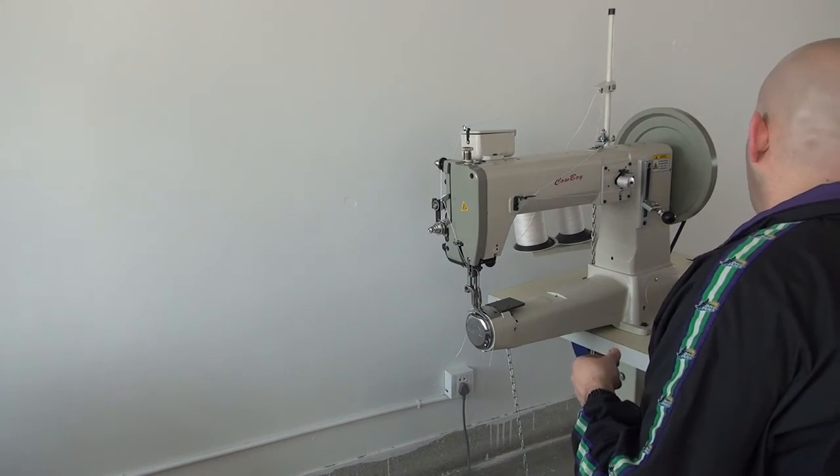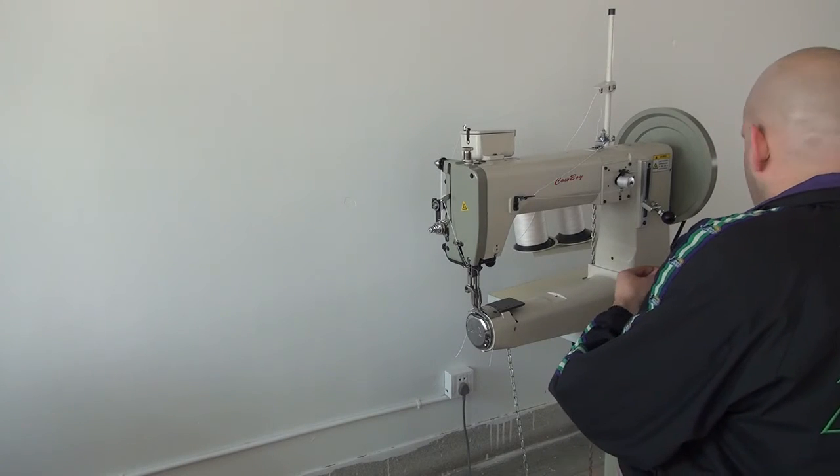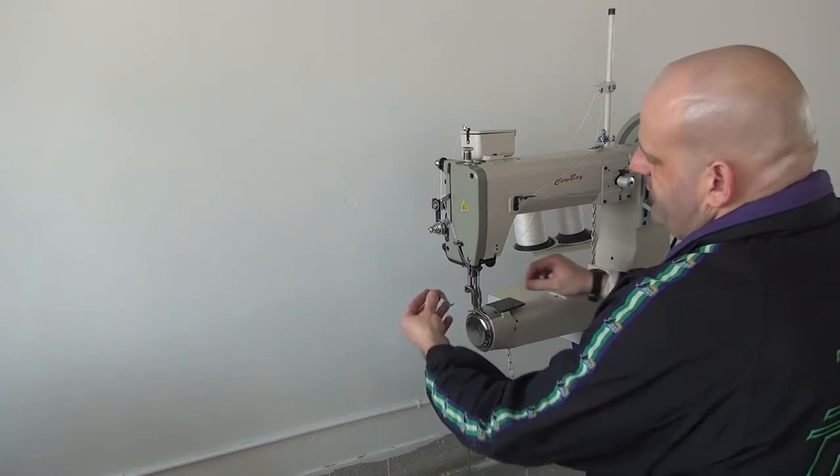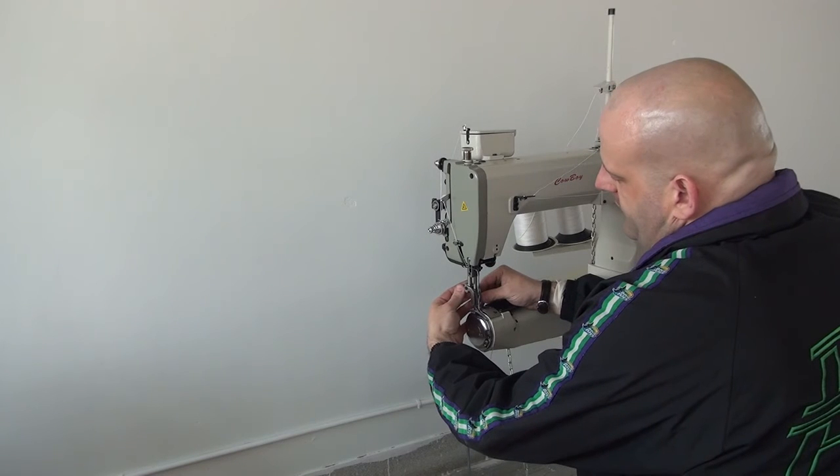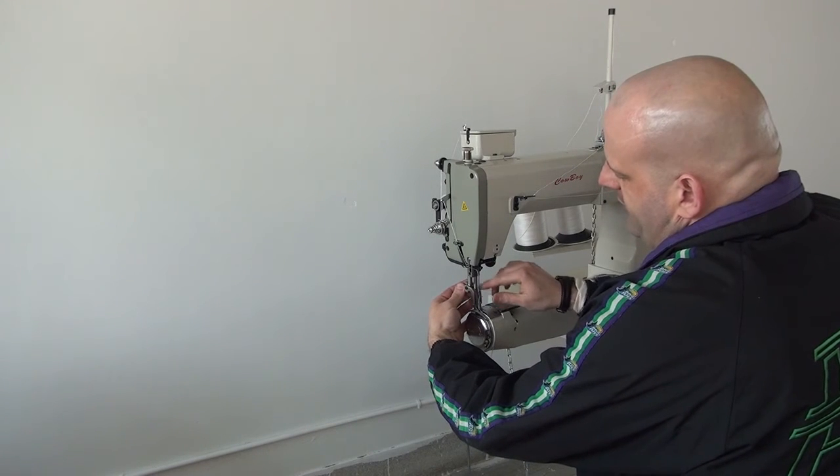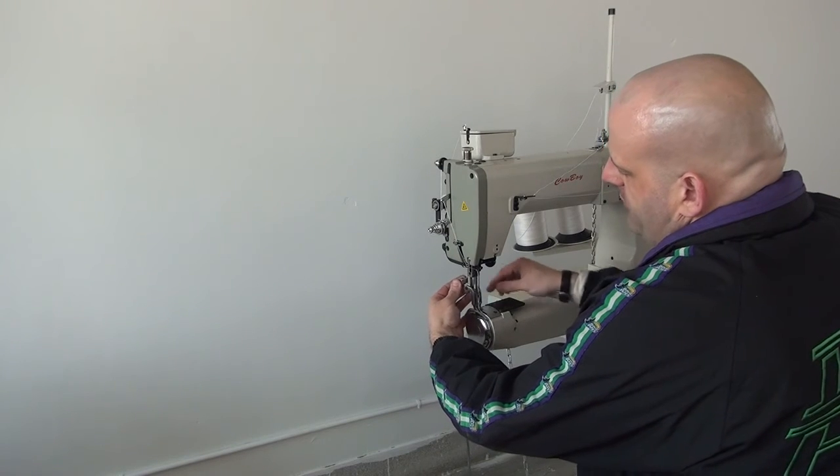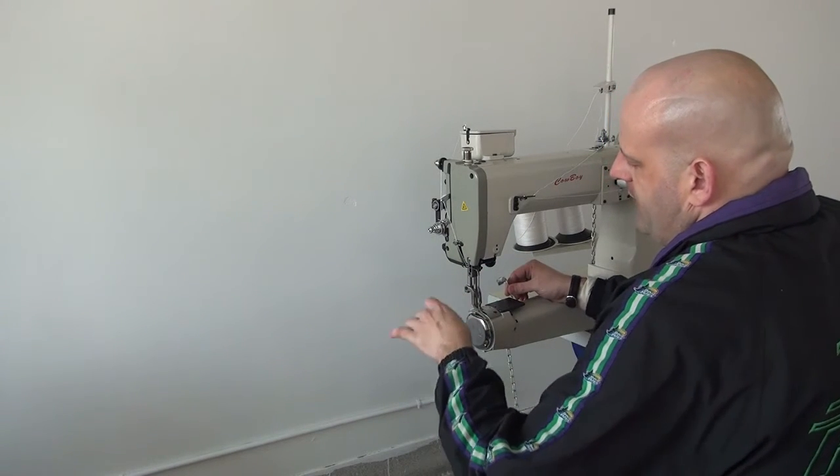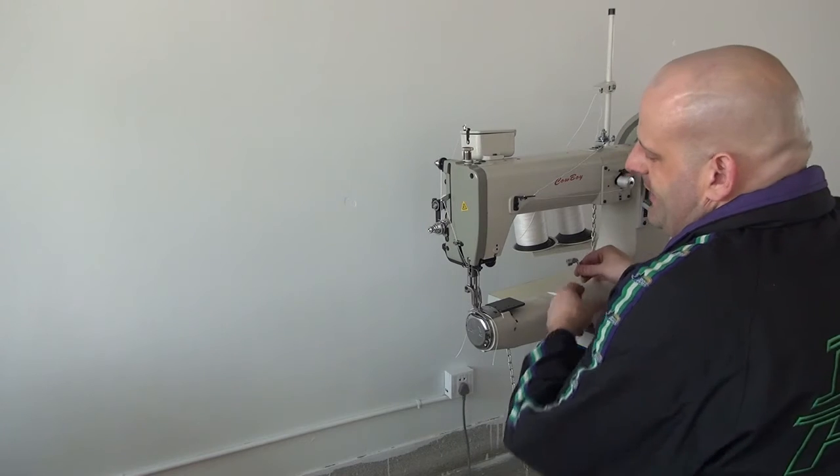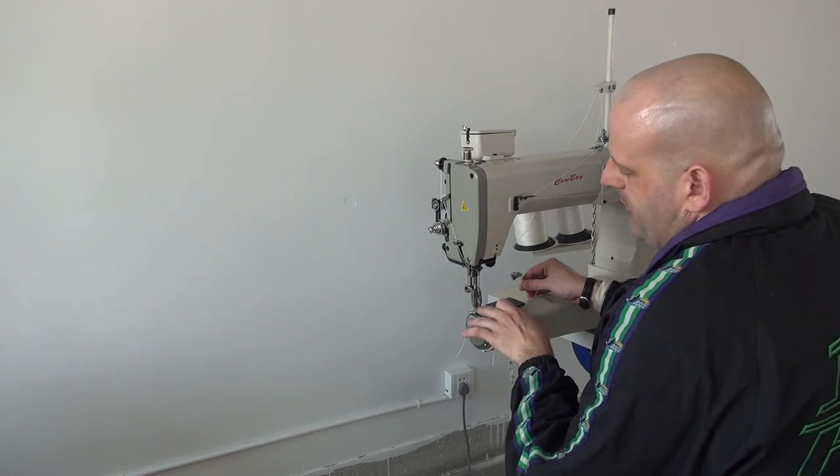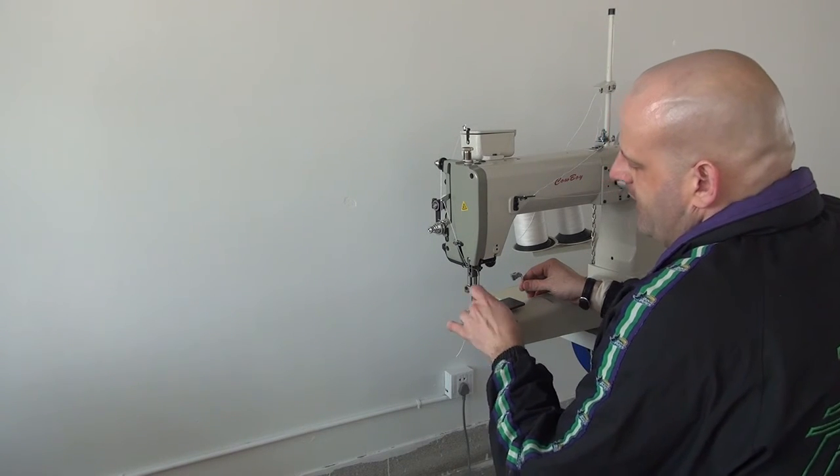In addition to that, we also have the right toe presser foot, which mounts immediately to the right of the inside presser foot. And this works really well when you're sewing materials that are actually going to be on the inside of the arm because then you can butt the edge right up against the inside presser foot.